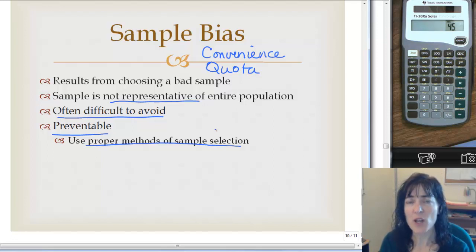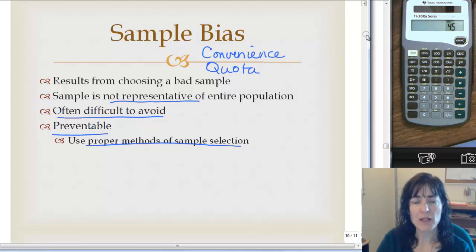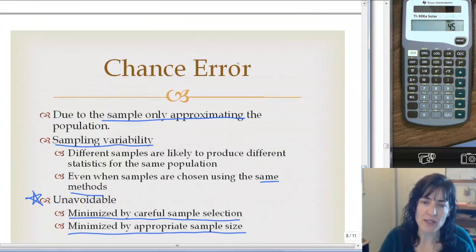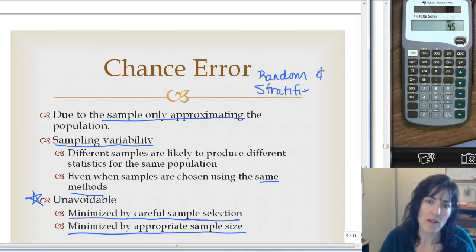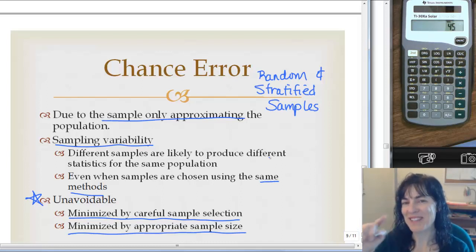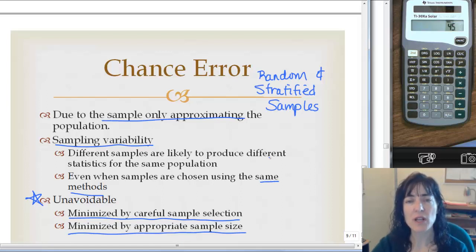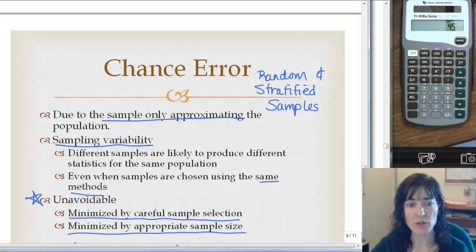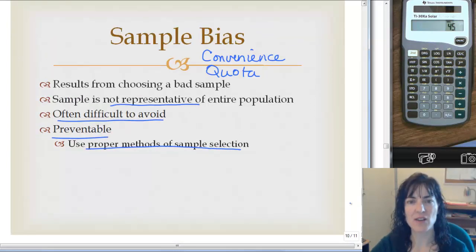Sample bias especially comes from convenience samples and quota samples, because we're not giving every person an equal chance to be in our sample. Chance error will be present in random and stratified samples — remember those were the lowest bias, ranked better and best. They still have chance error and sampling variability from one sample to another, and error because it's a small group, not the entire population. But we minimize it by being very careful about choosing our samples and using appropriate sample sizes. Chance error is small; sample bias is bigger and comes from using a bad sampling method like convenience or quota.